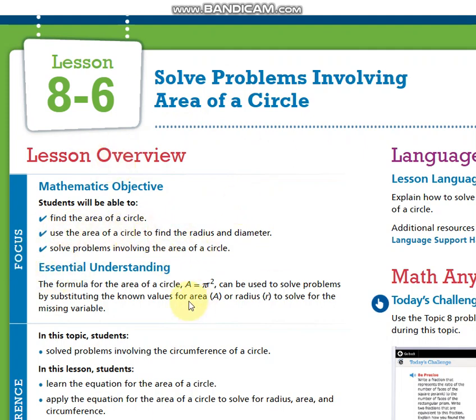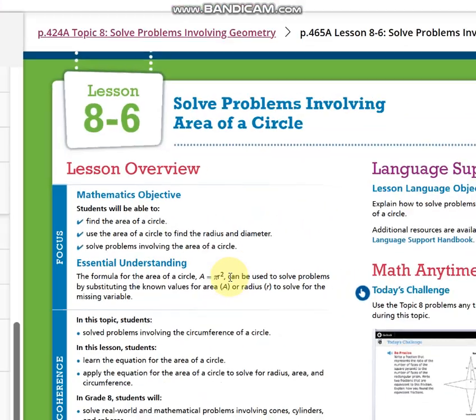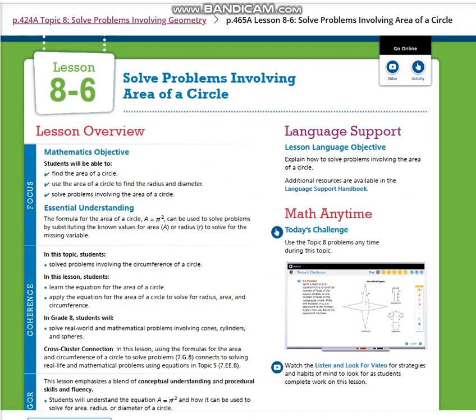To find the area, there is a relation, which is the area of a circle equals πr². We will use this relation.